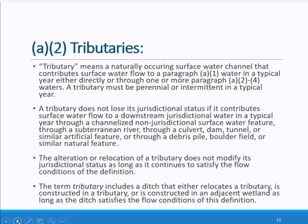The second category of jurisdictional waters is tributaries. In order to be considered a tributary and therefore jurisdictional under the Clean Water Act, rivers and streams and other natural channels must first be intermittent or perennial in a typical year. They also must contribute surface water flow to a downstream TNW or territorial sea in a typical year. They can also flow through other categories of jurisdictional waters like lakes before reaching a TNW or territorial sea.